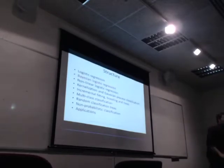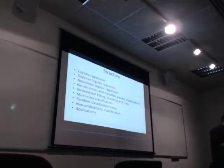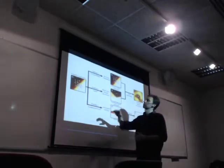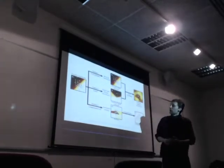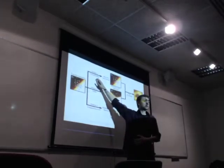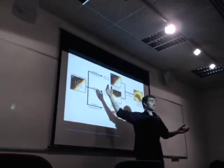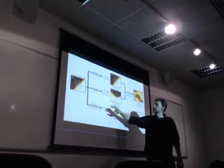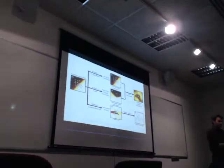Bayesian logistic regression comes to the rescue. There are three problems with maximum likelihood logistic regression: first, it's overconfident in places far away from the data; second, it's linear — just a linear decision boundary which doesn't work for all data sets; and third, there's the computational cost. We're going to try to address all three in the next hour.